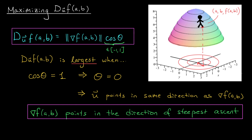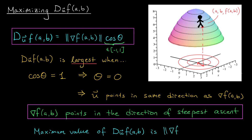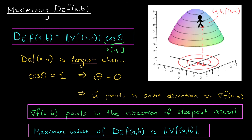It's also worth noting that we've figured out the maximum possible value of the directional derivative. The directional derivative is largest when cos theta equals one, in which case the right-hand side becomes simply the norm of the gradient vector. So the maximum value of the directional derivative is the norm of del f at ab — that's the largest rate of change Jose could possibly experience.